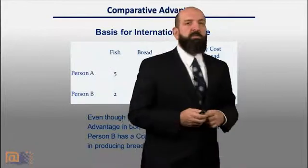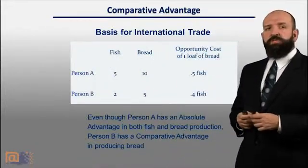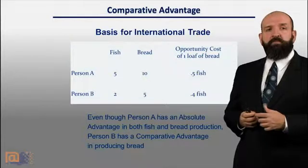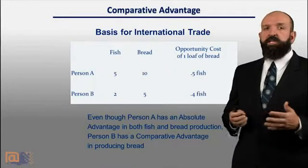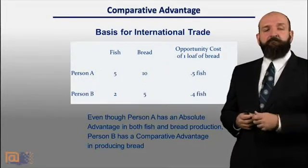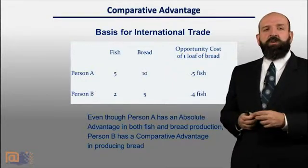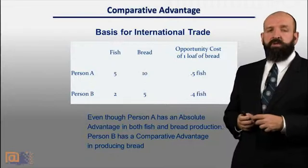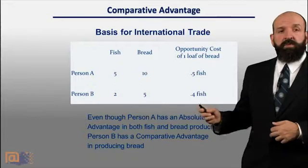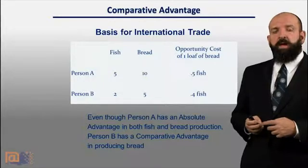The principle of opportunity cost is also the basis for international trade. Consider the simplest example with just two individuals — person A and person B — both of whom can engage in two activities: catch fish or bake bread. Person A can catch five fish and bake ten loaves of bread, while person B can only catch two fish and bake five loaves. Even though person A has an absolute advantage in both fish and bread production, person B actually has a comparative advantage in producing bread.